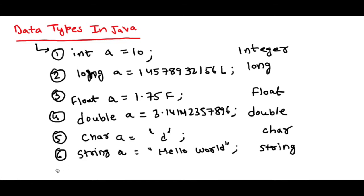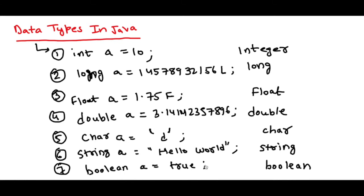The last data type is boolean. Boolean is used to store only two values: either true or false. If you have some conditional requirement where you want to represent true or false, you store it in a boolean variable. A boolean variable can hold only two values — true or false — and cannot hold any other values. This is specifically used for storing true or false values.